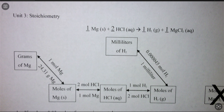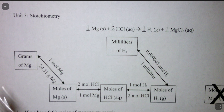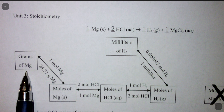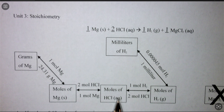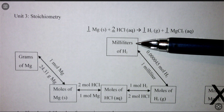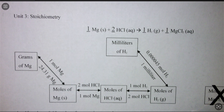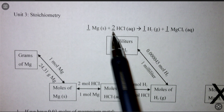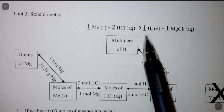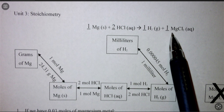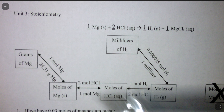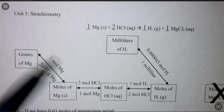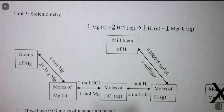This video is meant to talk through this map. We want to go ahead and show you what is on the map first before going through any of these problems. So here we have grams of magnesium, moles of magnesium, moles of hydrochloric acid, moles of hydrogen gas, and milliliters of hydrogen gas. All of this corresponds with the balanced equation up at the top. In between all of these boxes, we have the ratios that allow us to convert between different units.